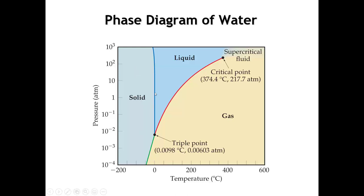Now, if we happen to be at a phase transition — say on the melting line between solid water and liquid water — there we have 2 phases present at equilibrium, so the degrees of freedom must be 1. We could change the pressure, but if we do, the temperature has to change in a specific way to stay on the line. We cannot independently change pressure and temperature and remain at a point where the solid and liquid phases are in equilibrium.